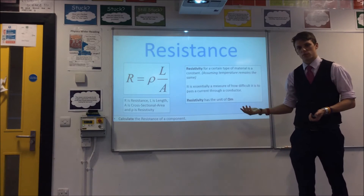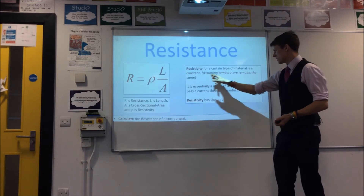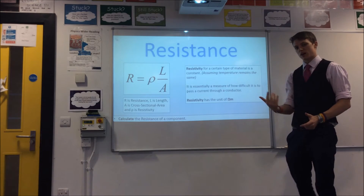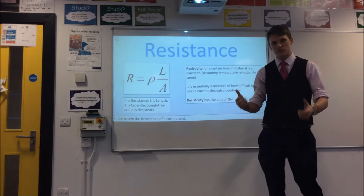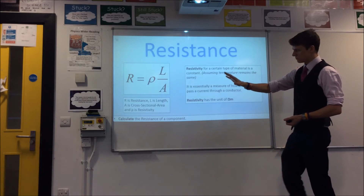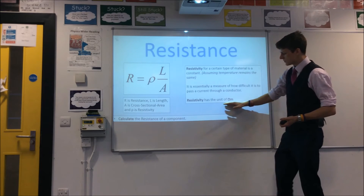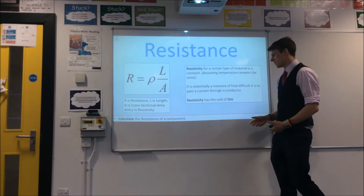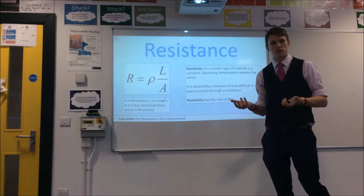However, if we change the temperature — heat it up — we actually change the resistivity of the material, which is why there was the proviso of assuming temperature stays the same. At the same temperature, all steels or aluminiums or coppers have the same resistivity. If you rearrange the equation and take the area and length to the other side, you can work out that resistivity has the unit of ohm metres — and it's essentially a measure of how good a conductor a material is.